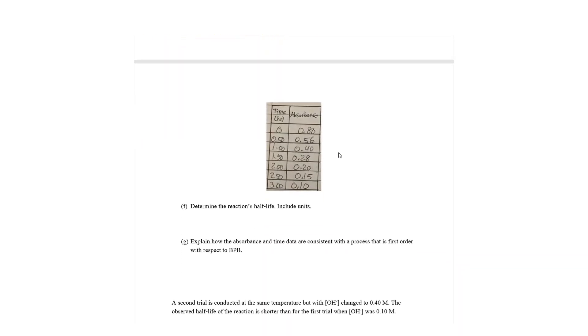Part F says, determine the reaction's half-life, include units. So, we know the absorbance is directly proportional to concentration. So, when the absorbance decreases by a factor of two, so does the concentration. And the half-life for a reaction is the amount of time it takes for your concentration to half. So, we see that that happens from 0 to 1 hour, 1 hour to 2 hours, 2 hours to 3 hours. So, the half-life is 1.00 hours.